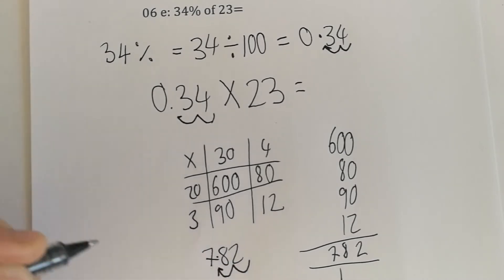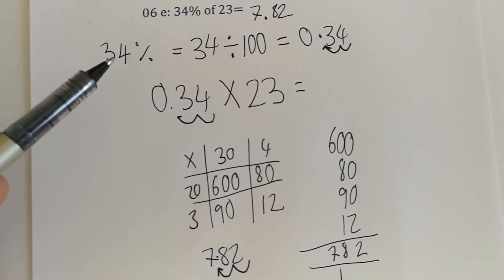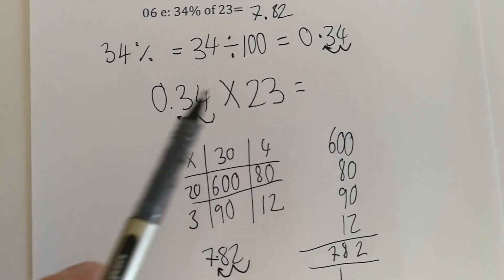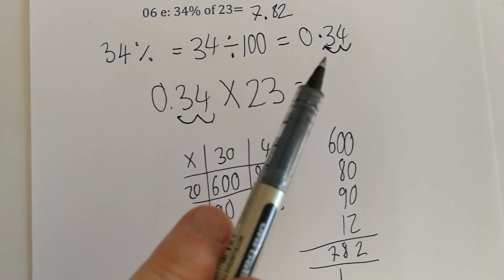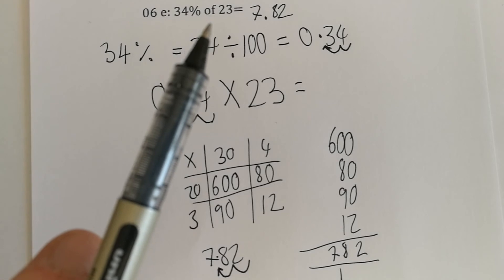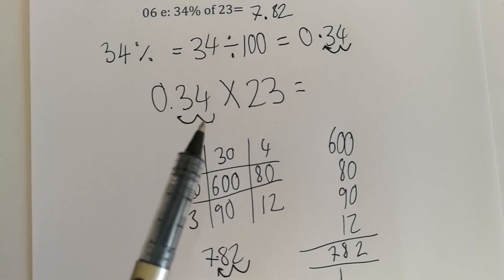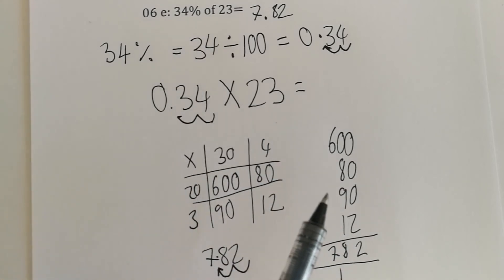Move it twice—it goes in the center there. So 34% of 23 is just 7.82. It's all about turning the percentage into a decimal, and then the word 'of' means times. So 0.34 times 23, and we work it out. That's 34% of 23.